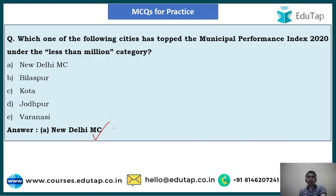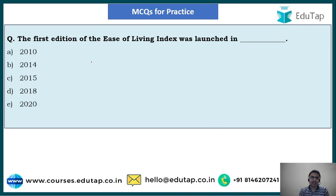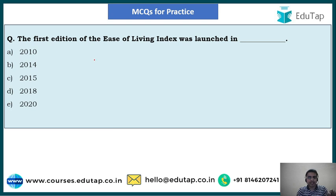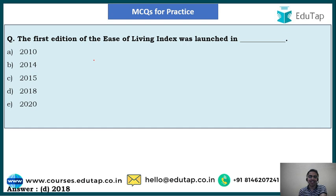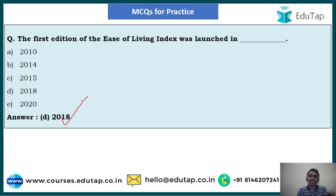Next question: The first edition of the Ease of Living Index was launched in — options: 2010, 2014, 2015, 2018, 2020. This question is related to the background of the index, which was discussed at the start of the session. The right answer is option D — 2018. The first edition of the Ease of Living Index was launched in the year 2018.